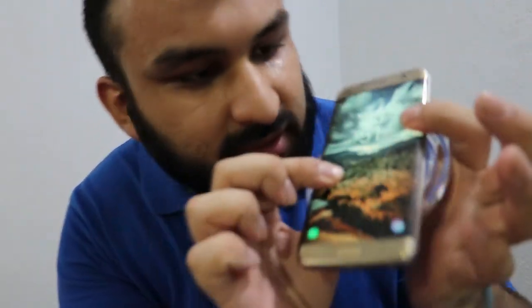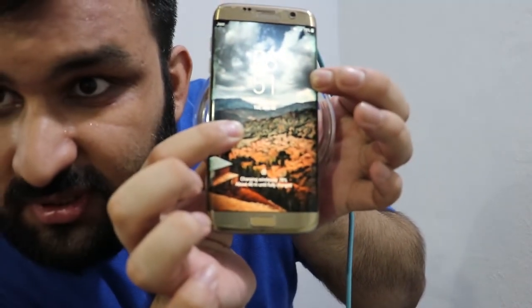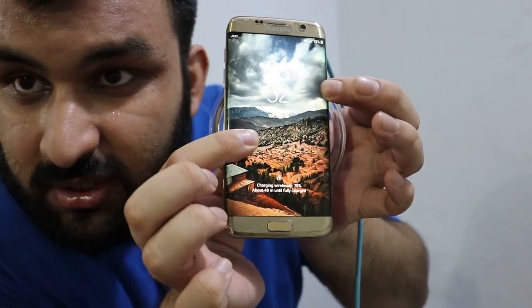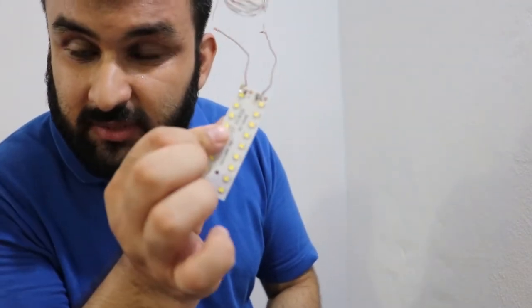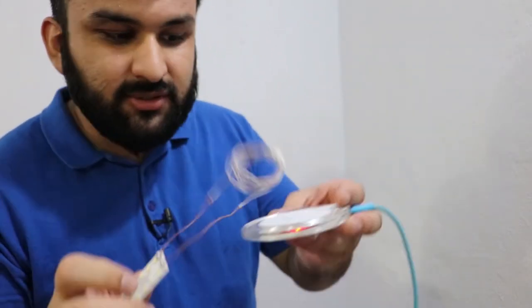You can see on this phone it says charging wirelessly. Here you go. I hope it focuses here - you could see it says charging wirelessly. And I also created a loop connected with some LED lights, and you could see it flashes.